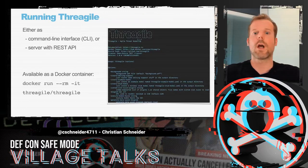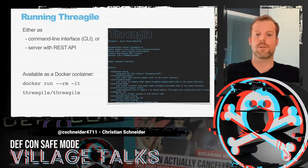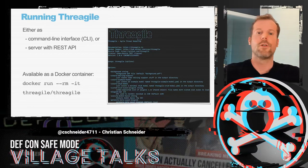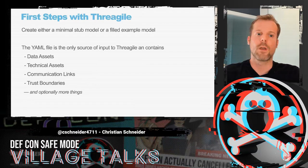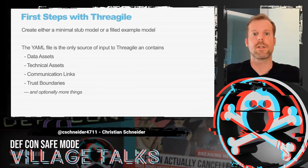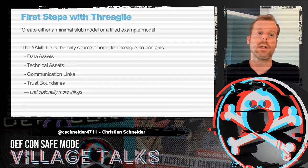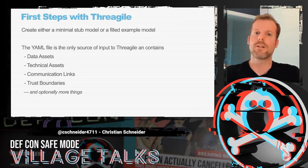In ThreadGile, you basically run it as a command-line interface. It's shipped as a Docker container, or you can execute it as a web server with a REST interface. The first steps are to create either a minimal stub model or a filled example model if you want to play with it. The YAML file is the input into ThreadGile, containing the data assets, the technical assets, the communication links, the trust boundaries, and a little bit more if you like.